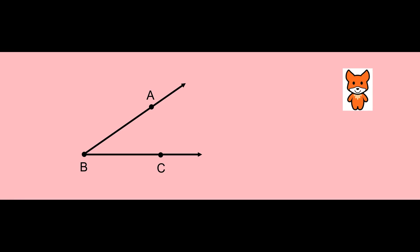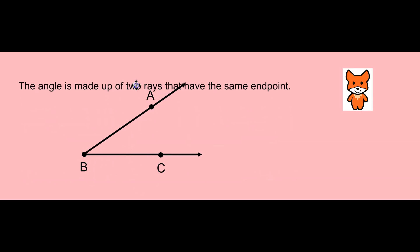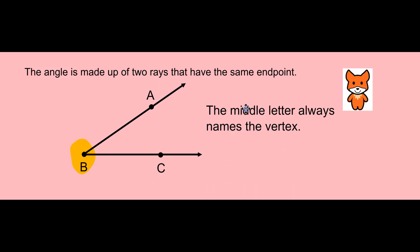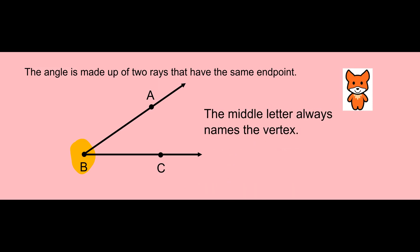An angle is made up of two rays that have the same endpoint. Endpoint B. We have ray BA and ray BC. When we name a ray, the middle letter always names the vertex.